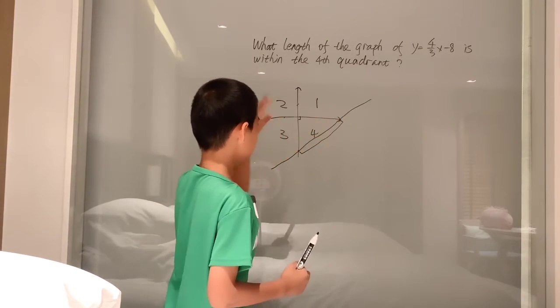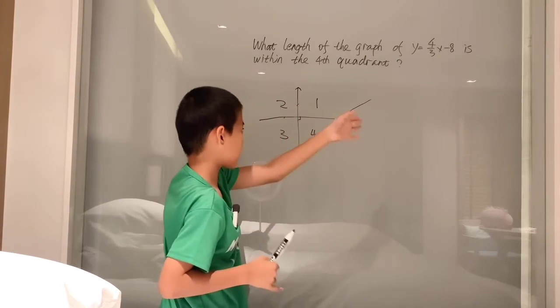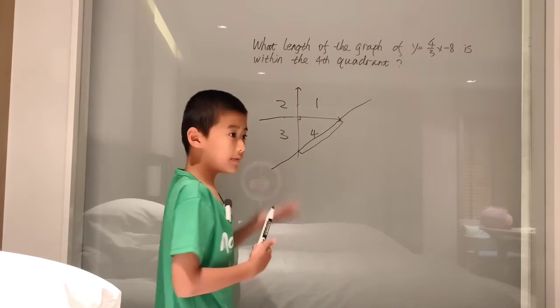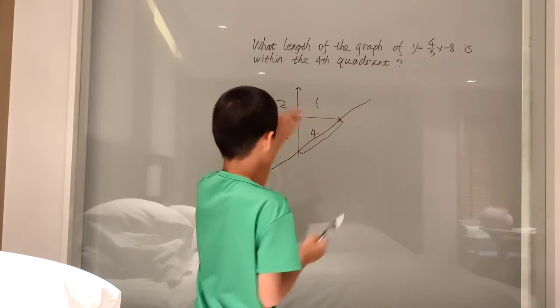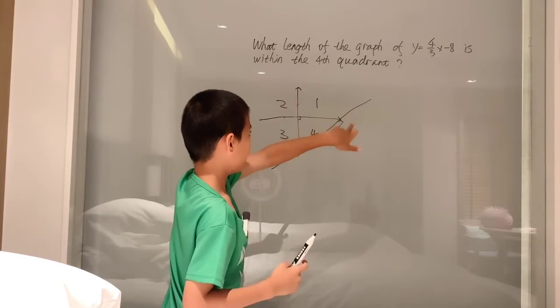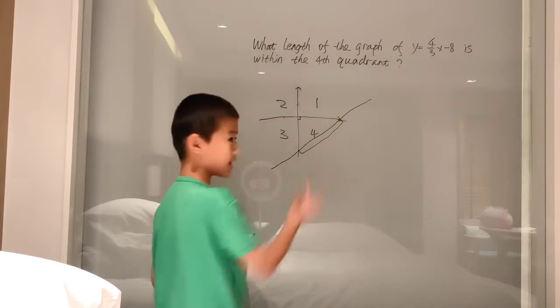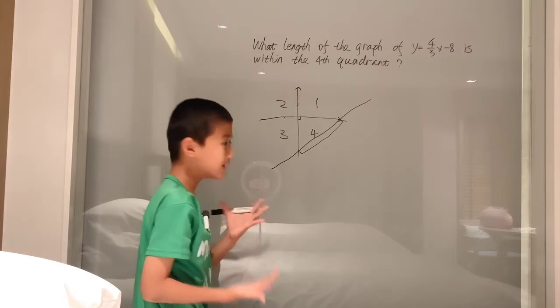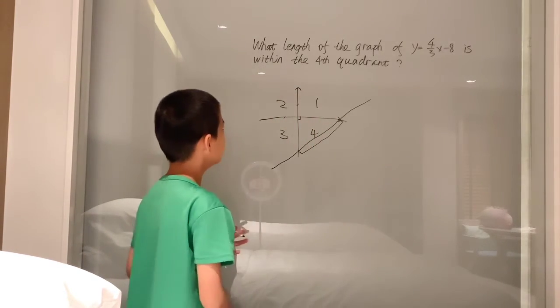So, that basically means you want the base and the height. You want the length of the base and the height of your right triangle. Well, we can find that, right? Since this length is just from the origin all the way up to the x-intercept. That's the x-intercept of this line. And similar to here, this is the y-intercept, since this line is intercepting at the y-coordinate.